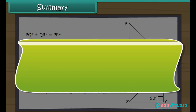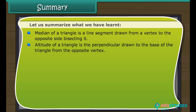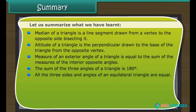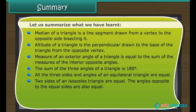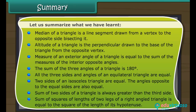Summary. The median of a triangle is a line segment drawn from a vertex to the opposite side, bisecting it. The altitude of a triangle is the perpendicular drawn to the base of the triangle from the opposite vertex. The measure of an exterior angle of a triangle equals the sum of the measures of the interior opposite angles. The sum of the three angles of a triangle is 180 degrees. All three sides and angles of an equilateral triangle are equal. Two sides of an isosceles triangle are equal, and the angles opposite to the equal sides are also equal. The sum of two sides of a triangle is always greater than the third side. The sum of the squares of the lengths of the two legs of a right-angled triangle equals the square of the length of its hypotenuse.